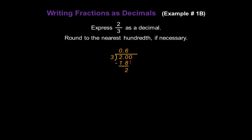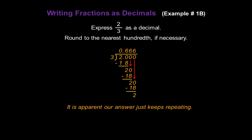Bring the 0 down to my remainder and make that 2 a 20 again. How many times does 3 go into 20? 6 times. 3 times 6 is 18, so we subtract 18 from 20 and get another remainder of 2. I see a pattern here — let's keep dividing. Add another 0, bring it down into our remainder to make 20 again. How many times does 3 go into 20? 6 times. 3 times 6 is 18, and yes, there's definitely a pattern — we have another remainder of 2. Our answer is just going to keep repeating with 6s.